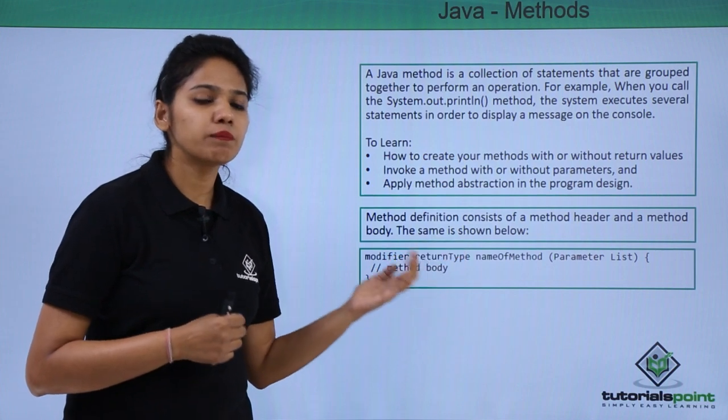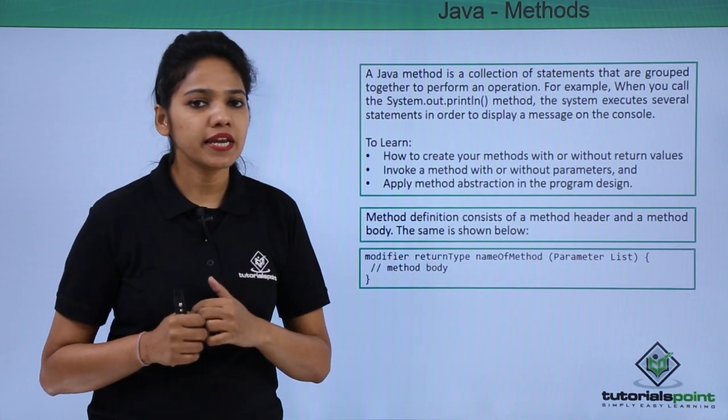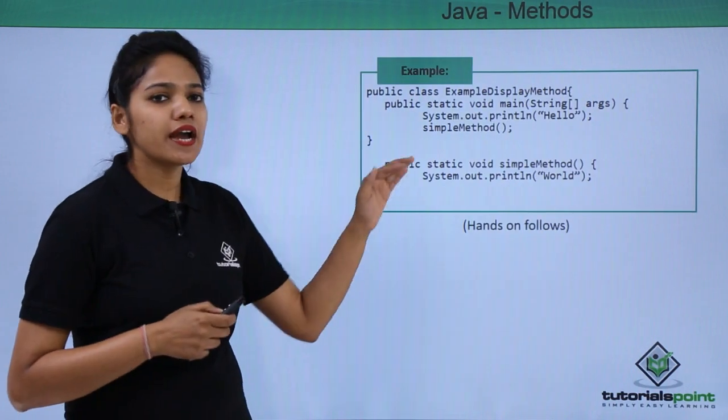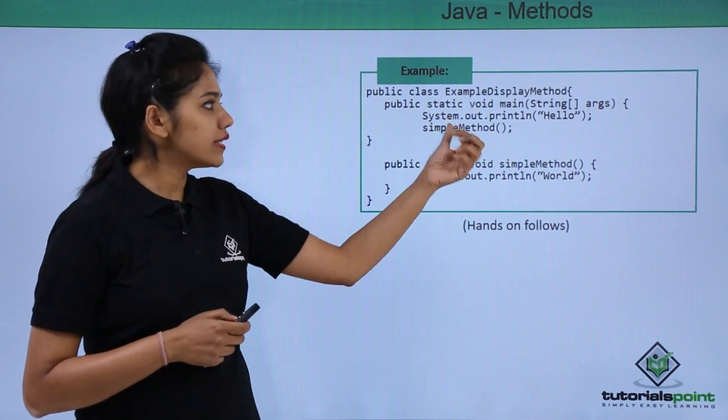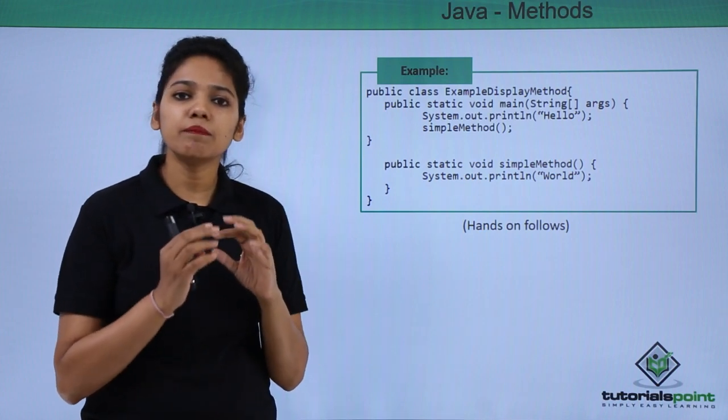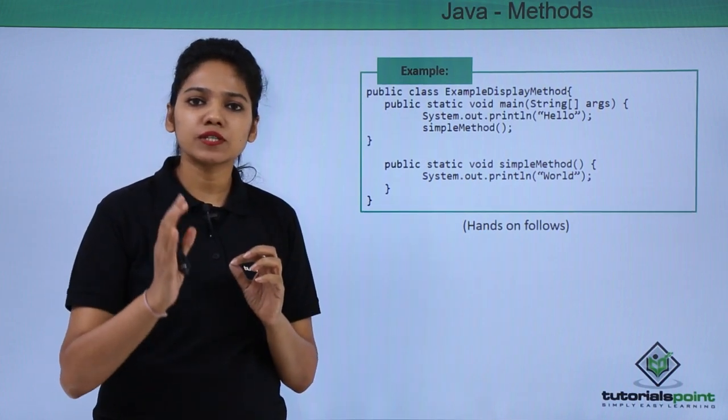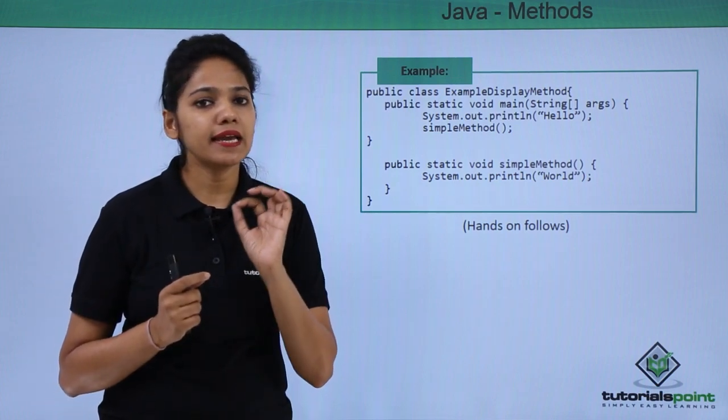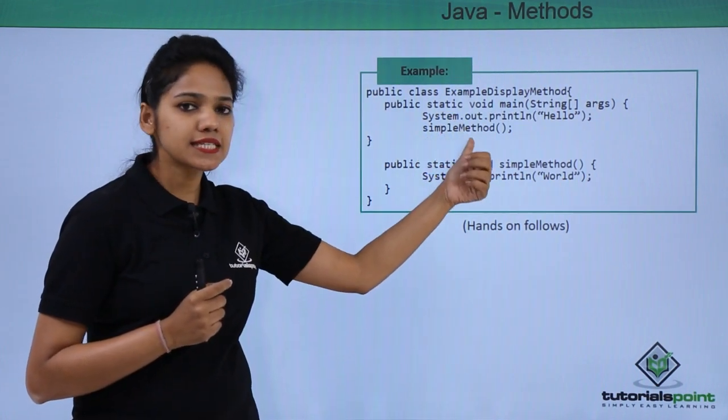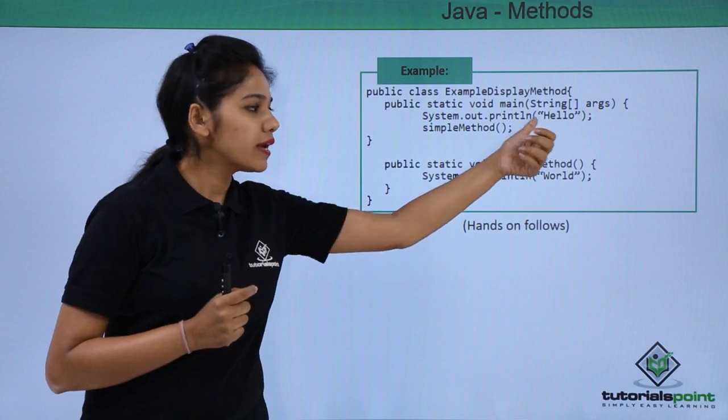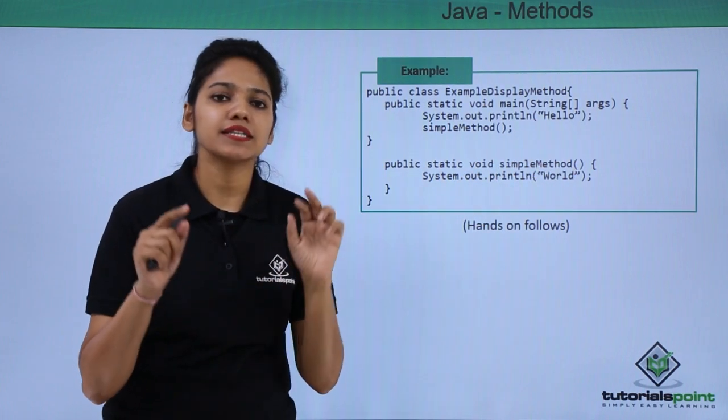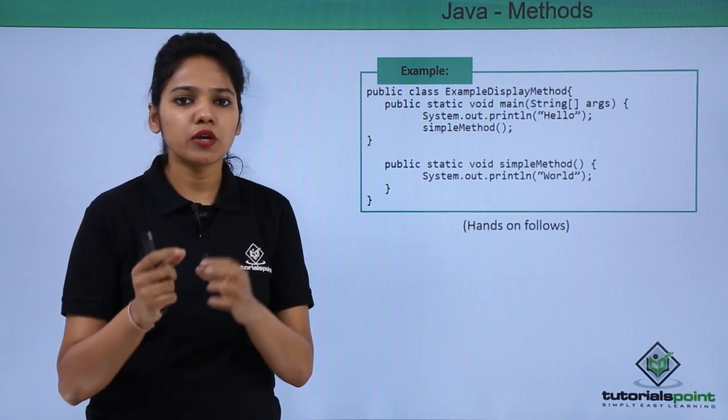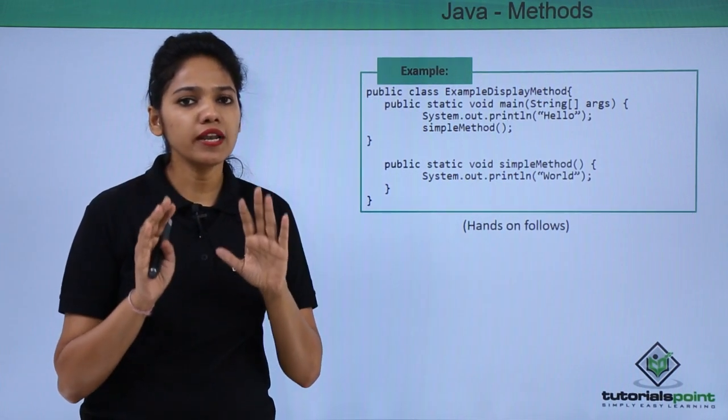In the brackets, when you write the block of statement that needs to be executed. So let us see with an example. Here we have created a class where it says example display method and under the main method, we are just trying to display an output and the output can be displayed with the help of println method and we write system.out.println and in the brackets, in the inverted commas, we write hello. So what it will do is that this method will be called and it will display the output called hello.